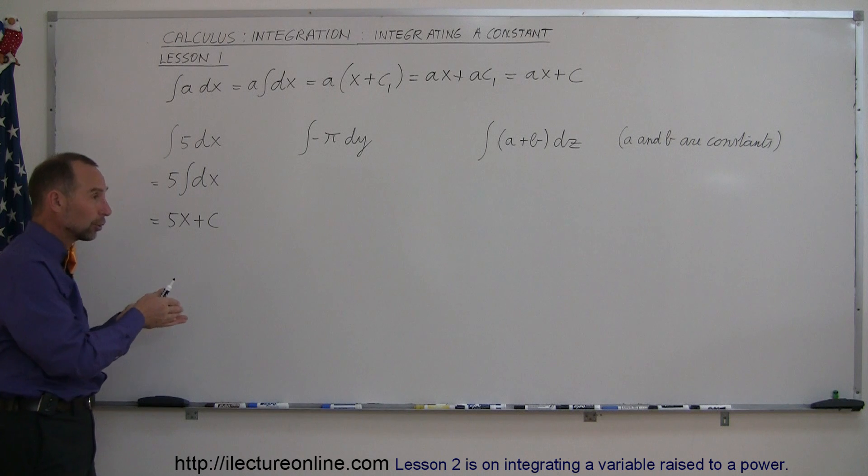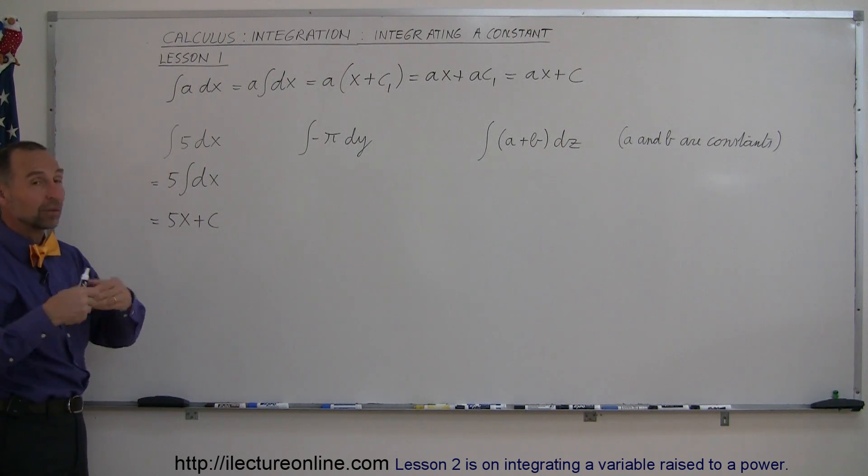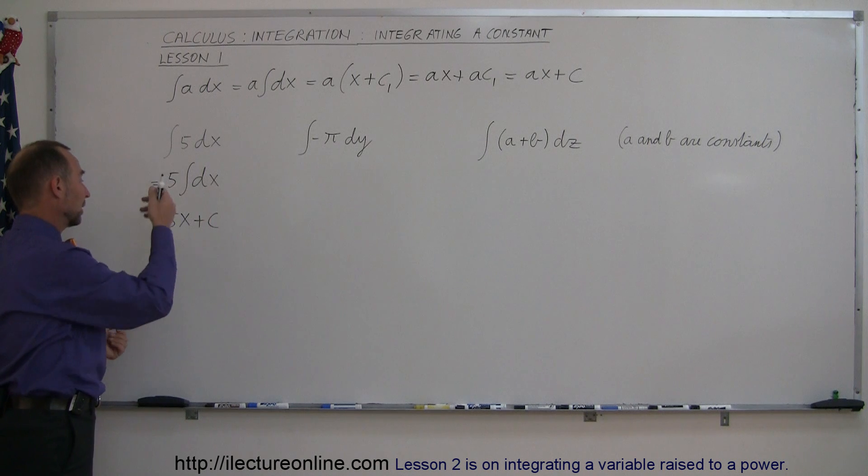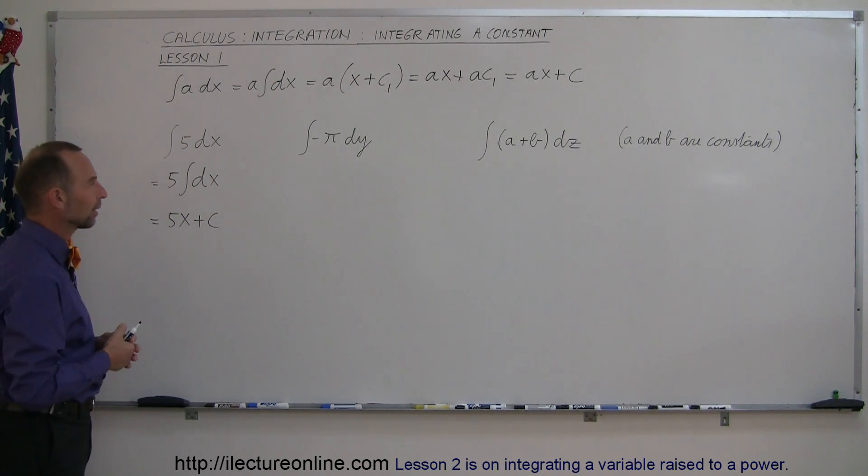when you then go the other way, you just have to say, well, there was some constant there, perhaps. It doesn't have to be. And since we don't know what it is, we'll just write it as the constant c. That's where that comes from.